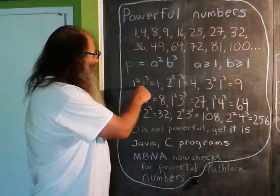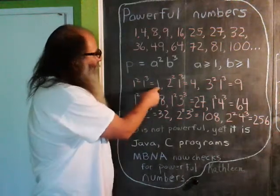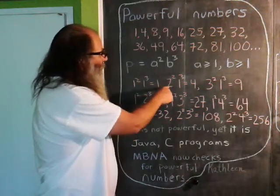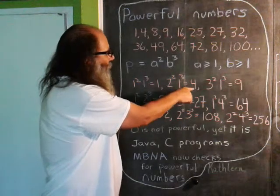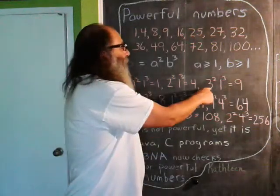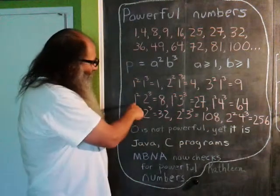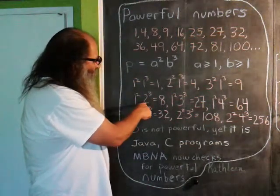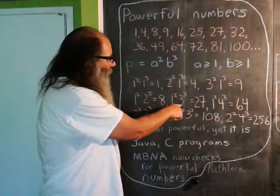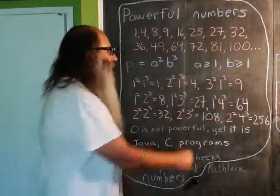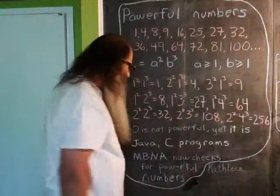So like, set a and b both equal to 1, you get 1. Set a to 2, b to 1, you get 4. Set a to 3 and b to 1, you get 9. And then if we sort of leave a at 1, b to 2 gives us 8, a1 b3 gives us 27, a1 b4 gives us 64.